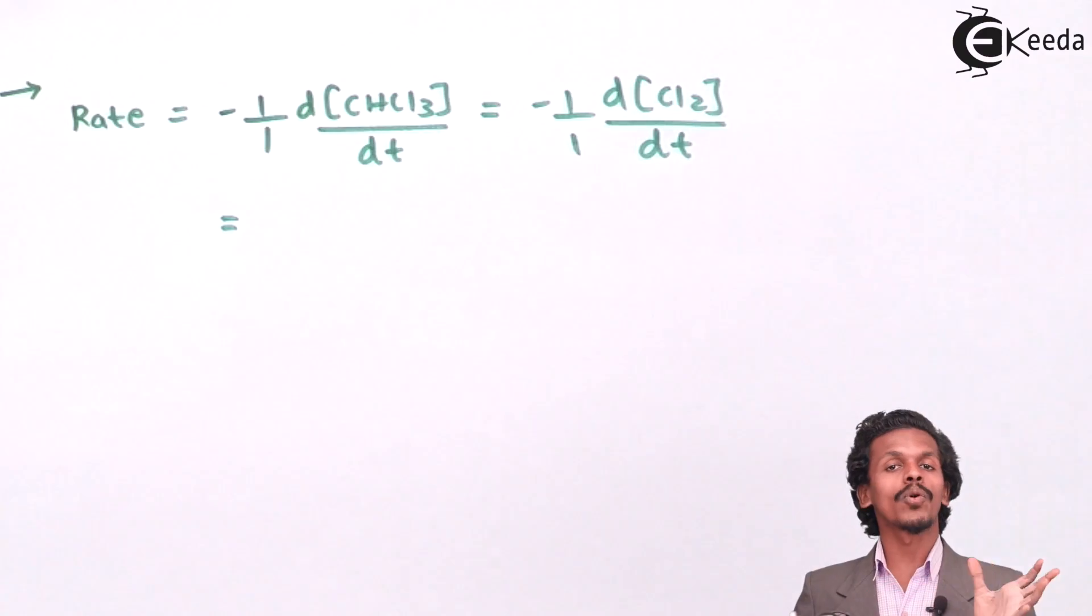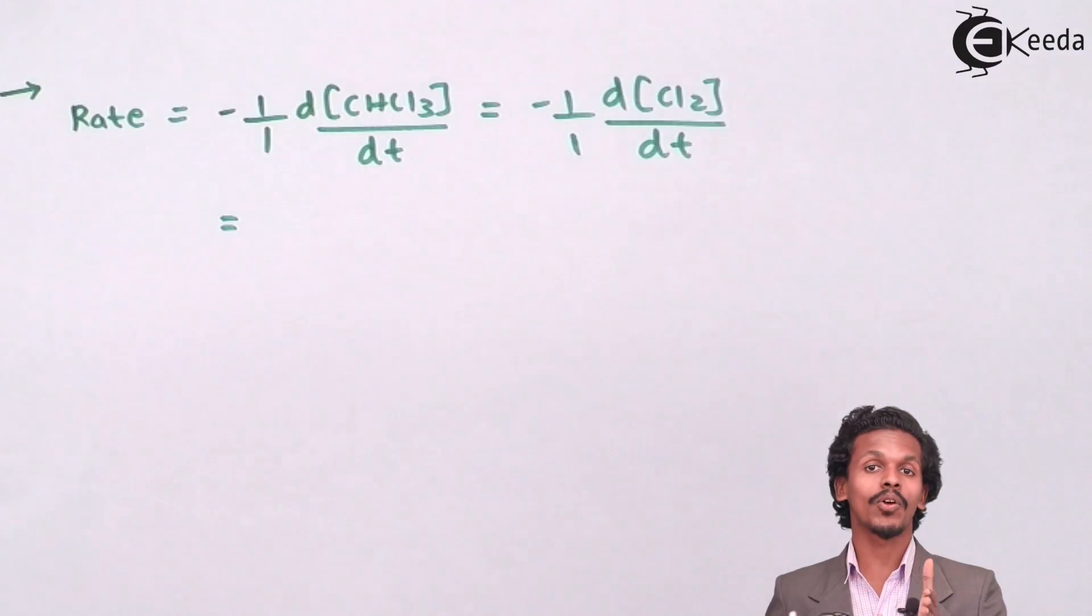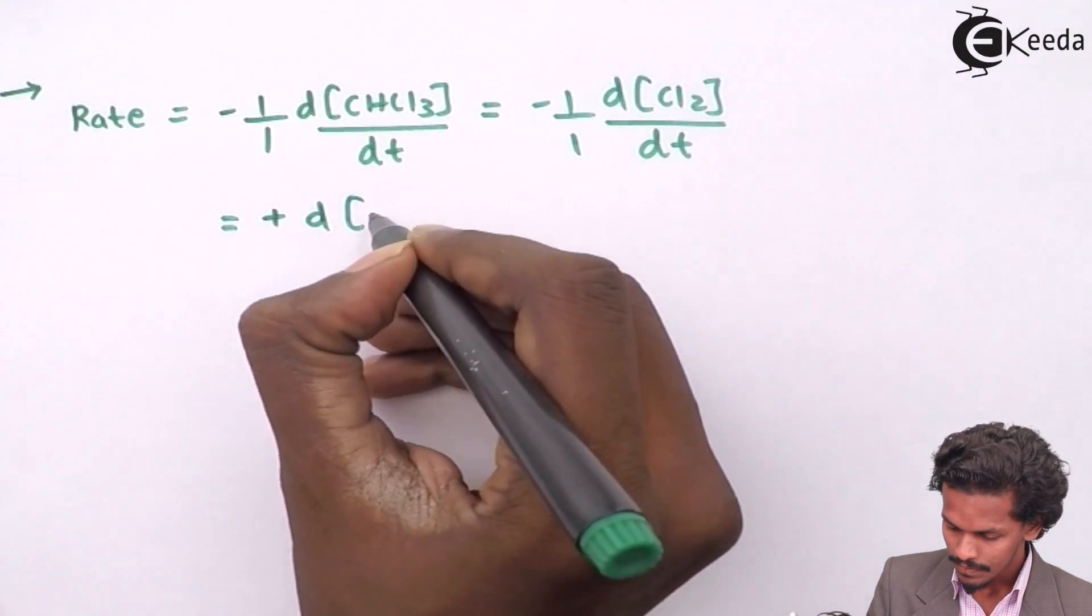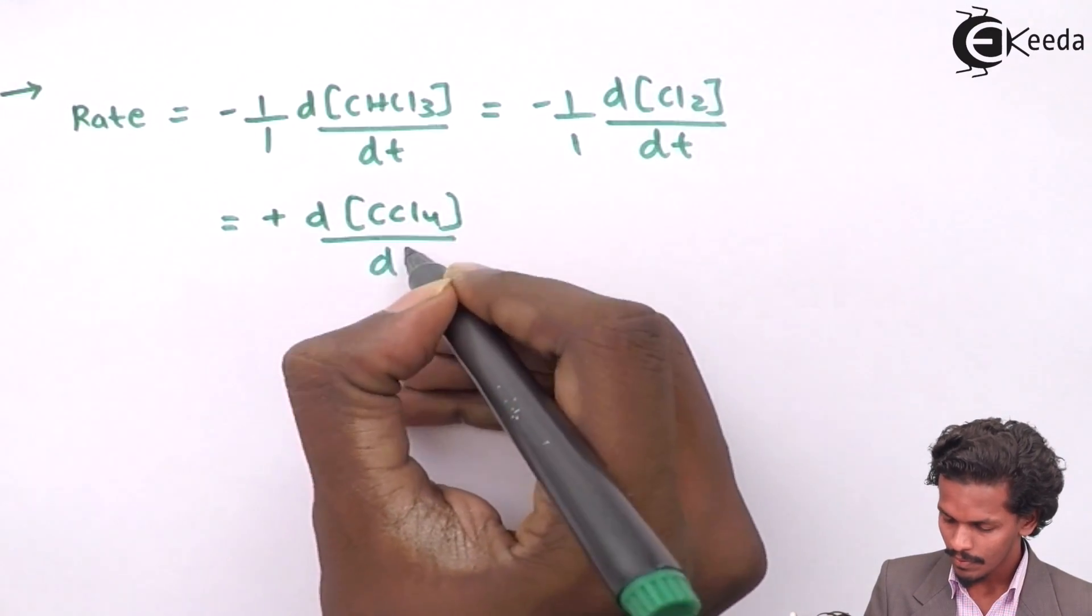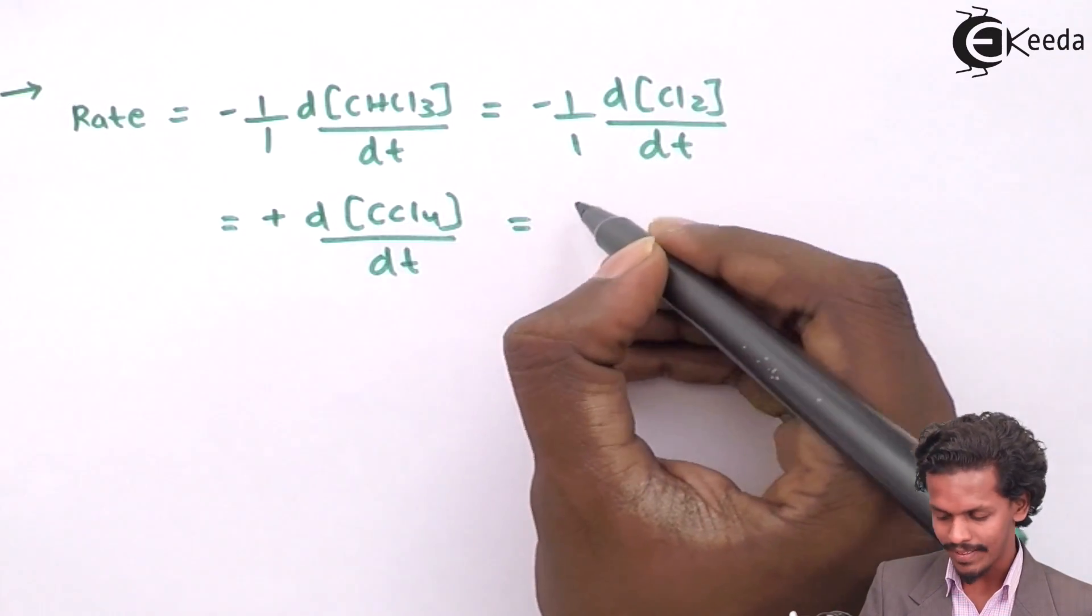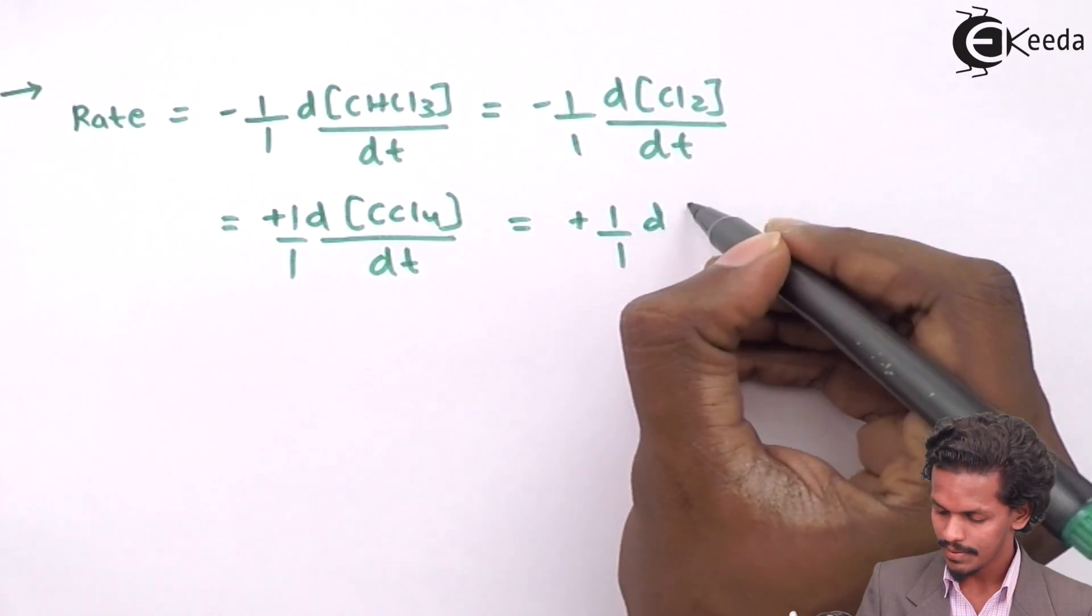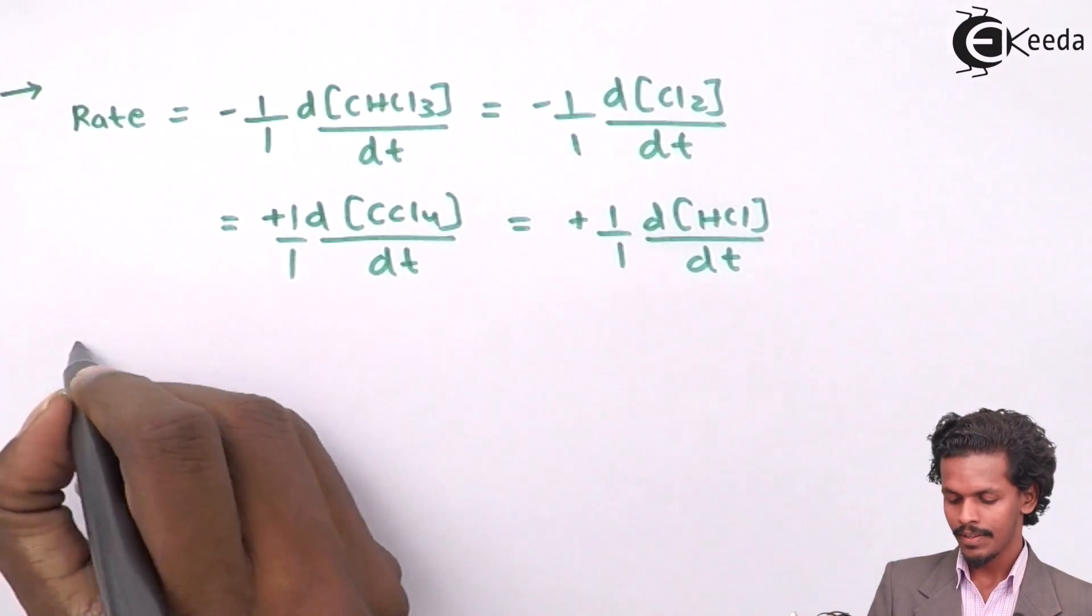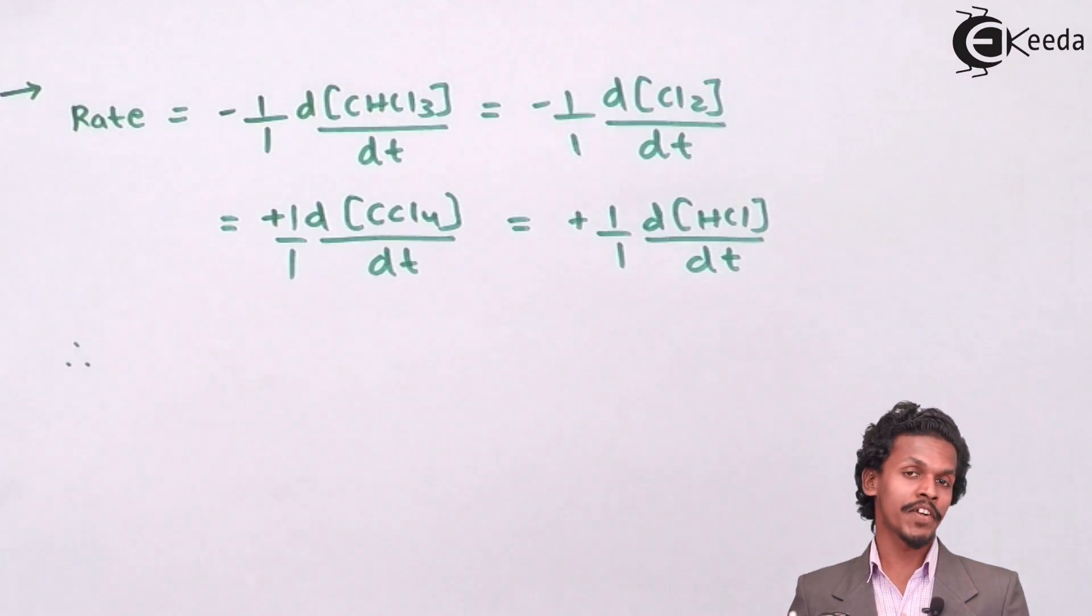So this was for the reactants. And now we are switching towards the products. And the products should be always positive because as the time proceeds, the concentration of product also goes on increasing. And for HCl also, it would be the same.